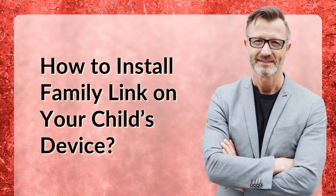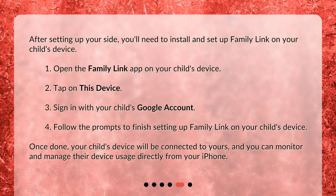How to install Family Link on your child's device? After setting up your side, you'll need to install and set up Family Link on your child's device. Open the Family Link app on your child's device. Tap on 'This device.' Sign in with your child's Google account. Follow the prompts to finish setting up Family Link on your child's device. Once done, your child's device will be connected to yours, and you can monitor and manage their device usage directly from your iPhone.